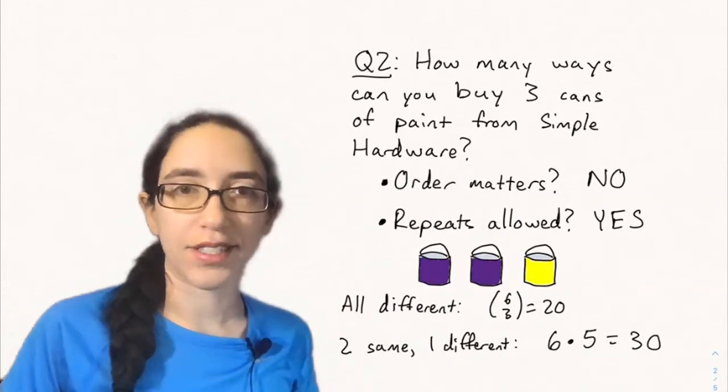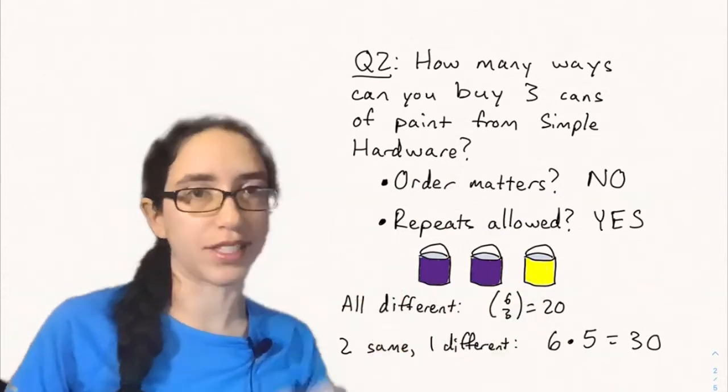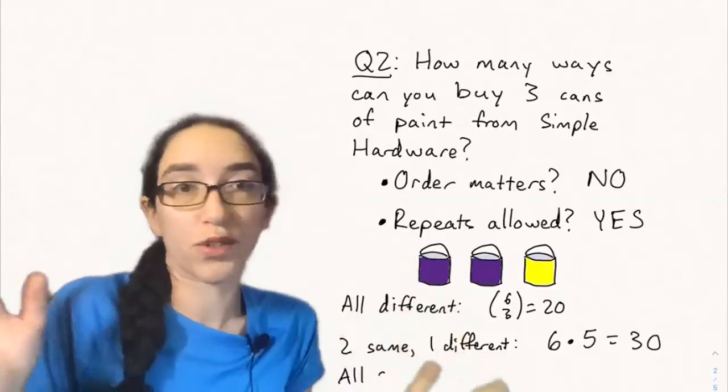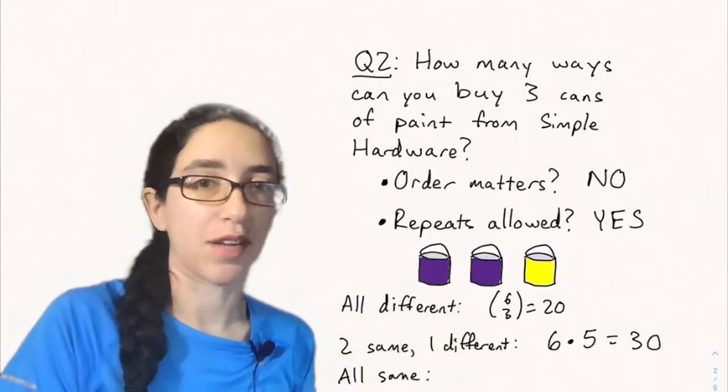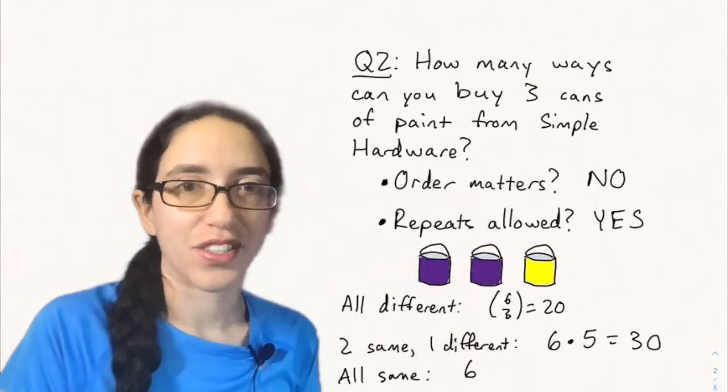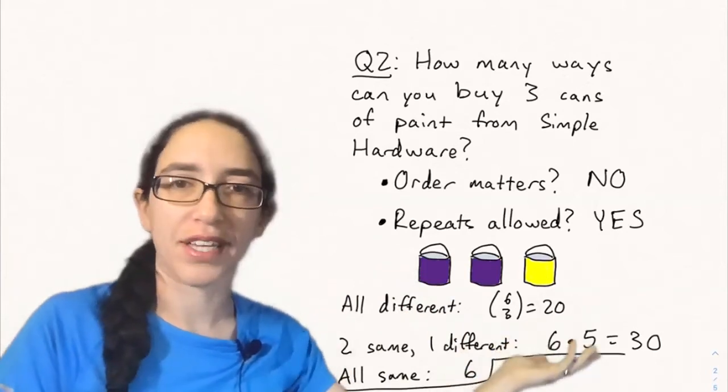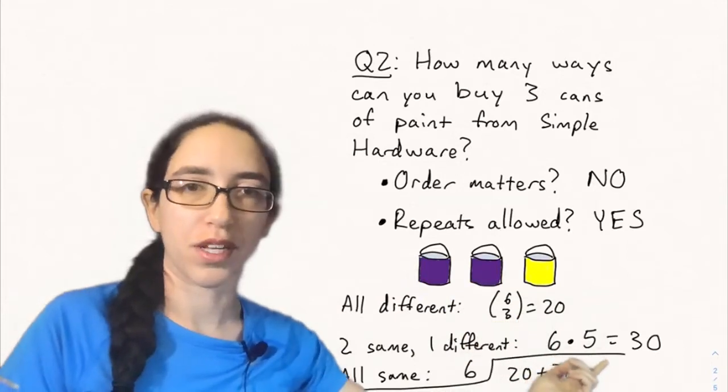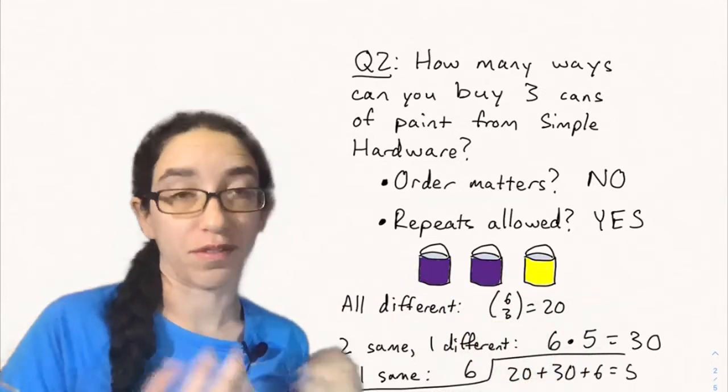And then the final case is when all three cans have the same color. So maybe you want to paint all your doors the same color and if you want to do that then there's just 6 possibilities because there's only 6 colors you can buy. And so all together we add these up 20 plus 30 plus 6 and we get 56.